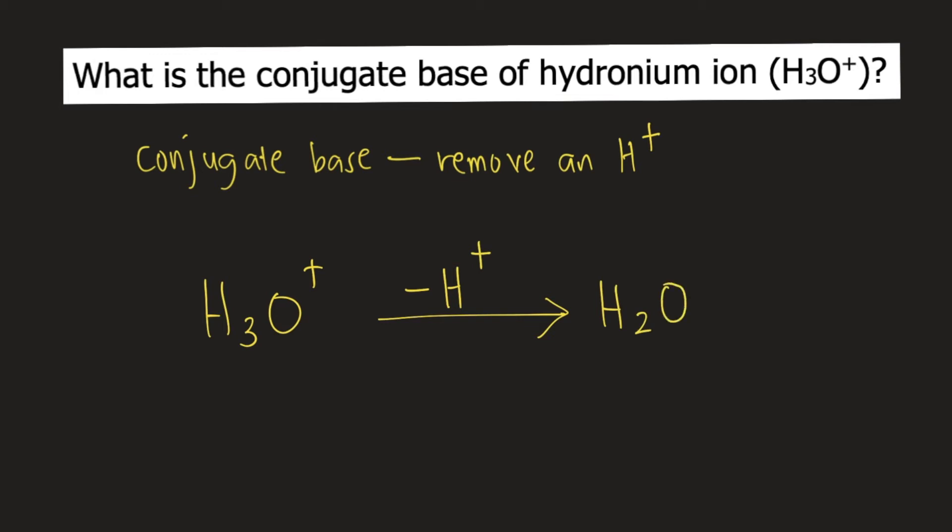But this is not yet the final answer. We need to look for the charge of H2O. How do we do that? The charge of H3O+ is positive 1. Minus the charge of H+ is also positive 1. So positive 1 minus positive 1, that is equal to 0.